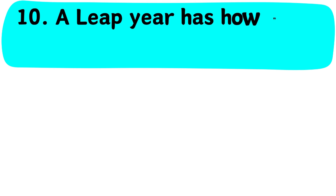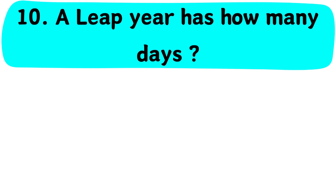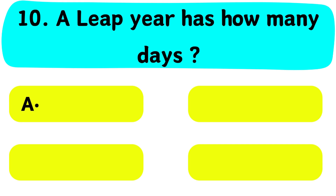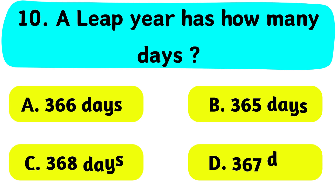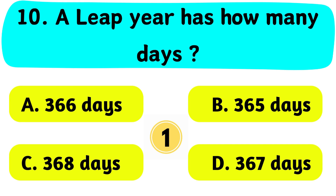Question No. 10. A leap year has how many days? A. 366 days, B. 365 days, C. 368 days, D. 367 days.